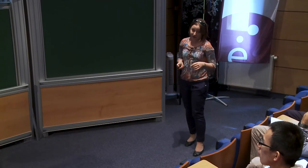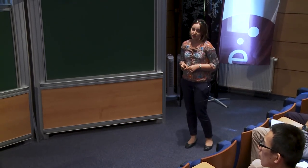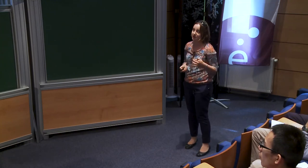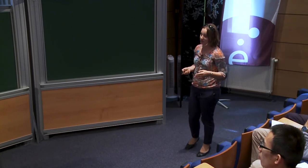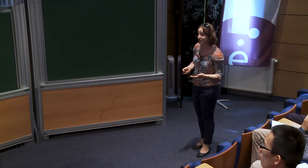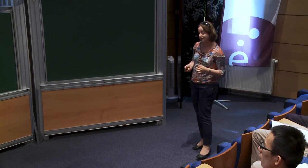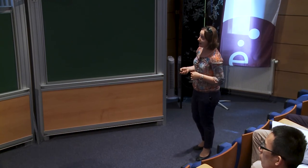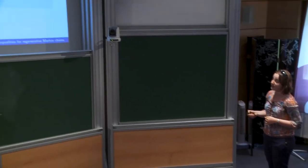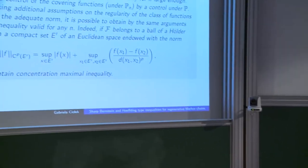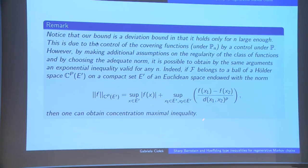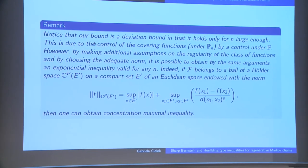A short remark: the bound holds for sufficiently large n, which is a drawback since we have a deviation inequality and would prefer a concentration inequality for applications. However, if F belongs to a ball of a Hölder space C^p and we have a Euclidean space endowed with the appropriate norm, then the inequality is actually a concentration one.